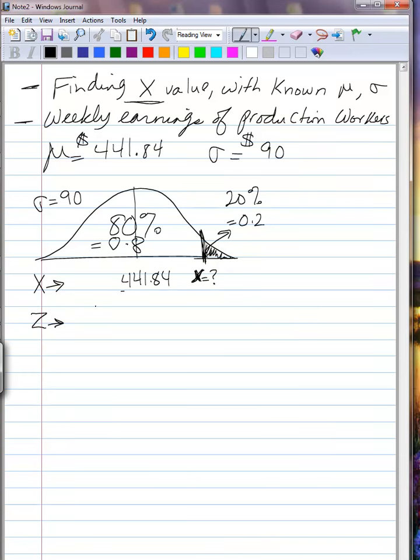But of course we need to convert everything to a z distribution. So the mean is equal to 0 on the z-axis, and we want to know what is this z value related to this x. We're going to our standard normal table.